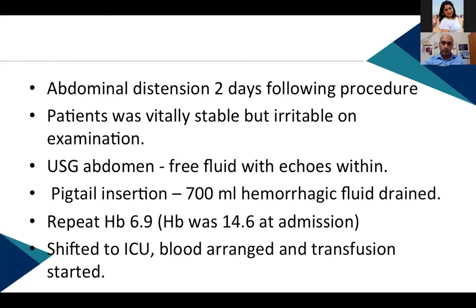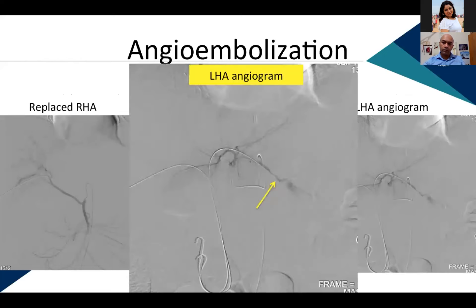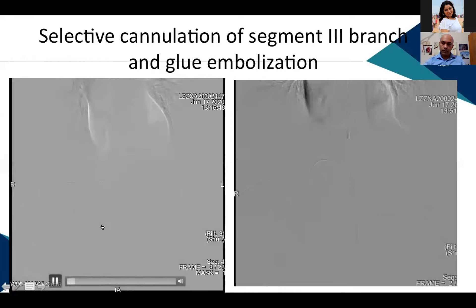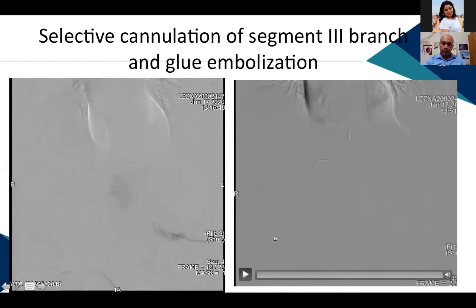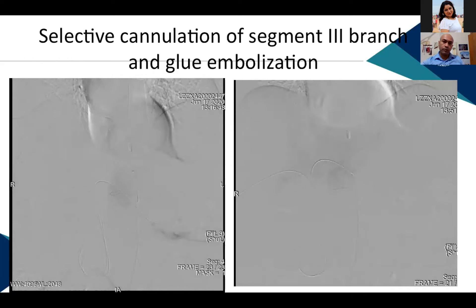Simultaneous hemoglobin was repeated, coming to 6.2, then 6.9. Hemoglobin at admission had been 14.6, representing a significant drop. The patient was shifted to ICU, blood was arranged, and transfusion was started. The patient was taken up for angioembolization. While the right hepatic artery was normal, the left hepatic artery angiogram showed vivid active extravasation of contrast.